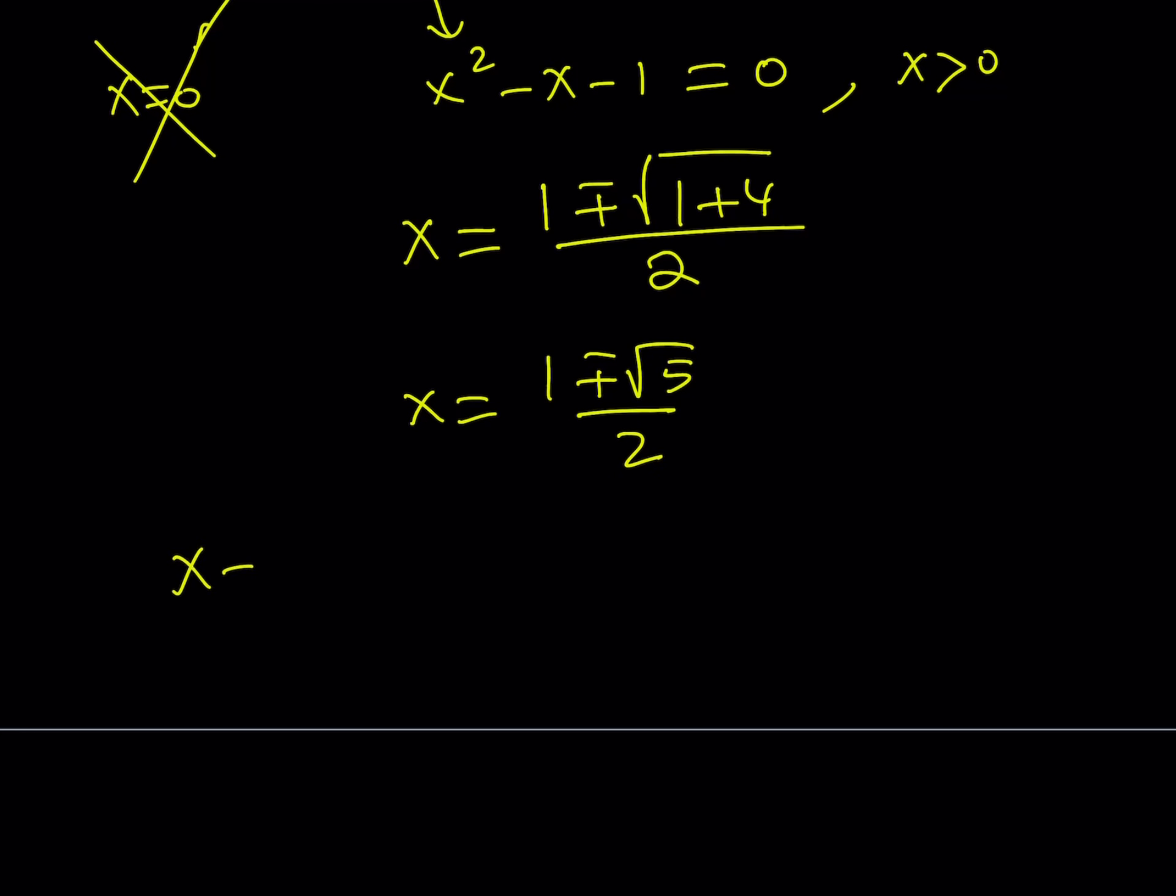This is going to be 1 plus minus the square root of 5 over 2. In other words, we have two candidates. x is either 1 minus root 5 over 2 or 1 plus root 5 over 2. Now, notice that root 5 is greater than 1.